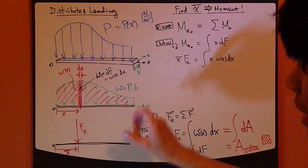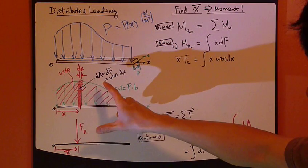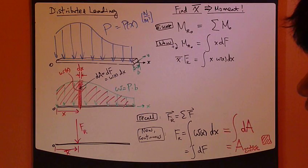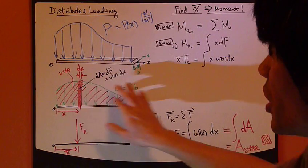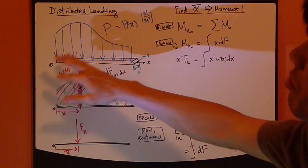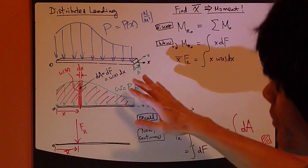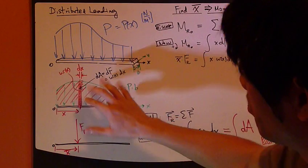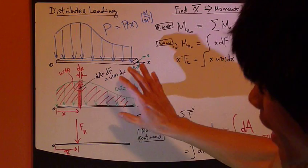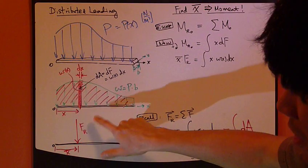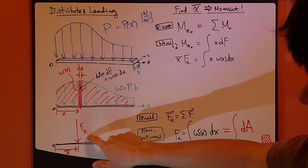This means that these two cases will have the same moment. The moment created by this blanketed force per area, a force per length, is the same moment created by this force right here.